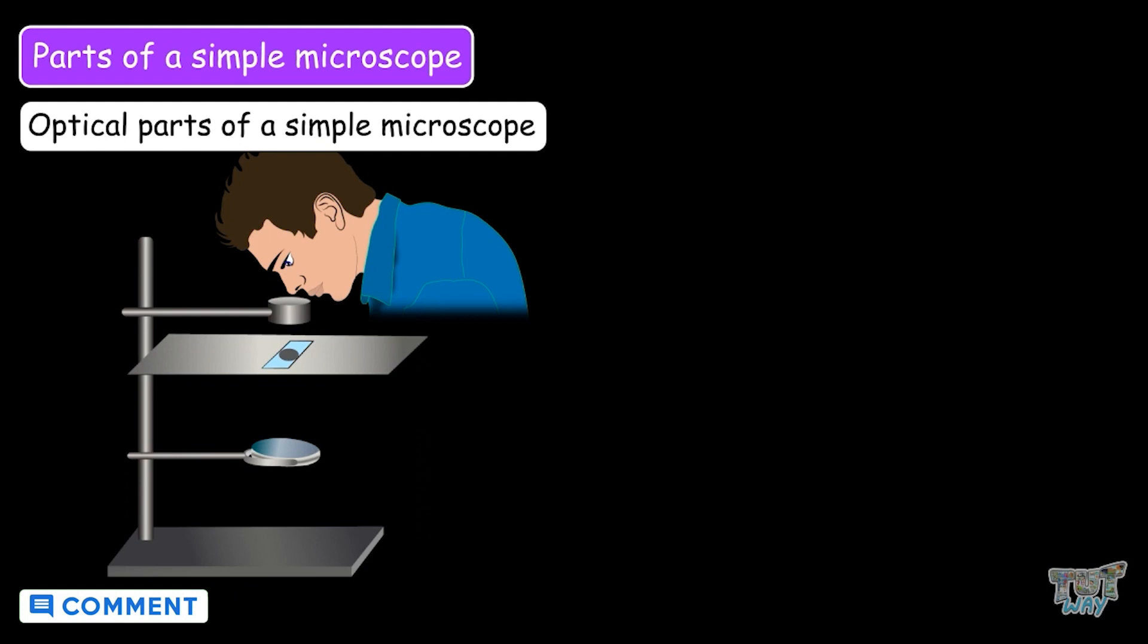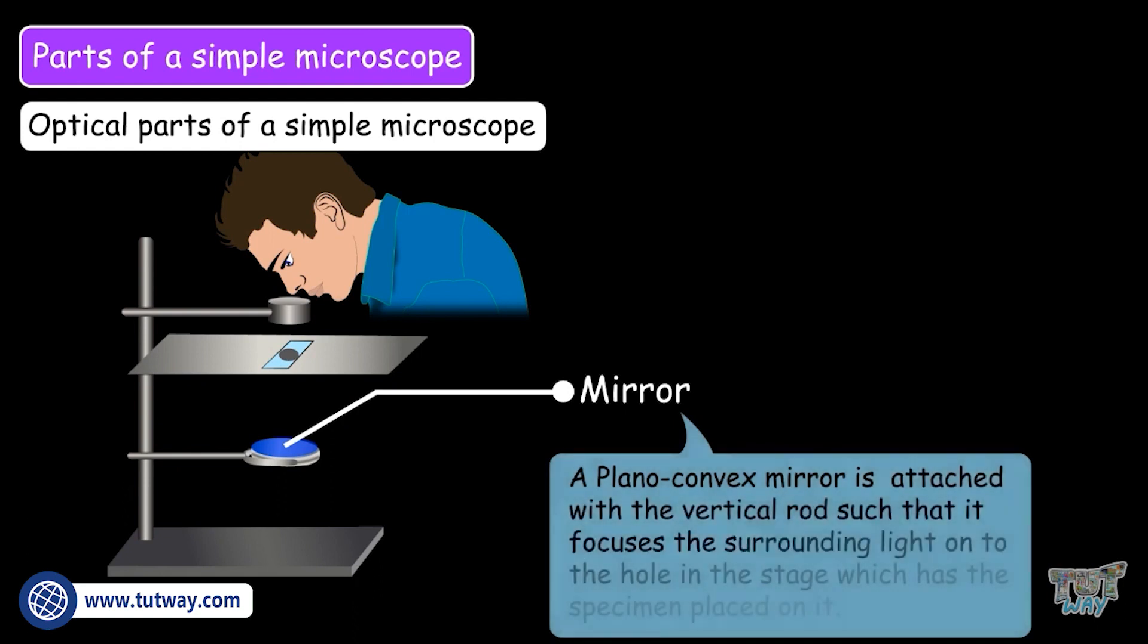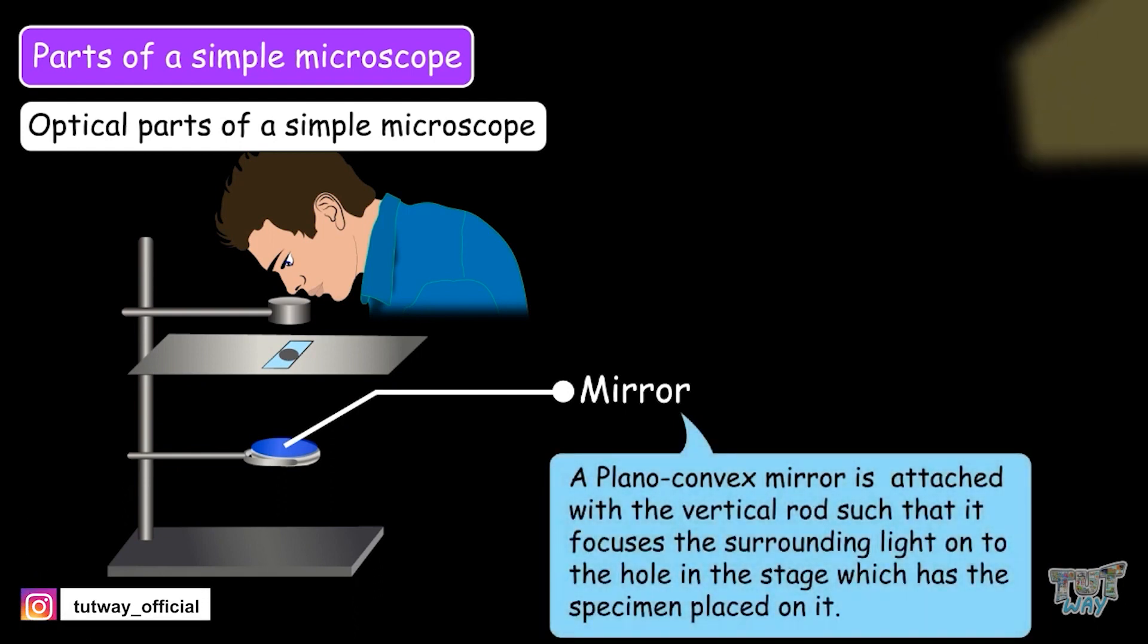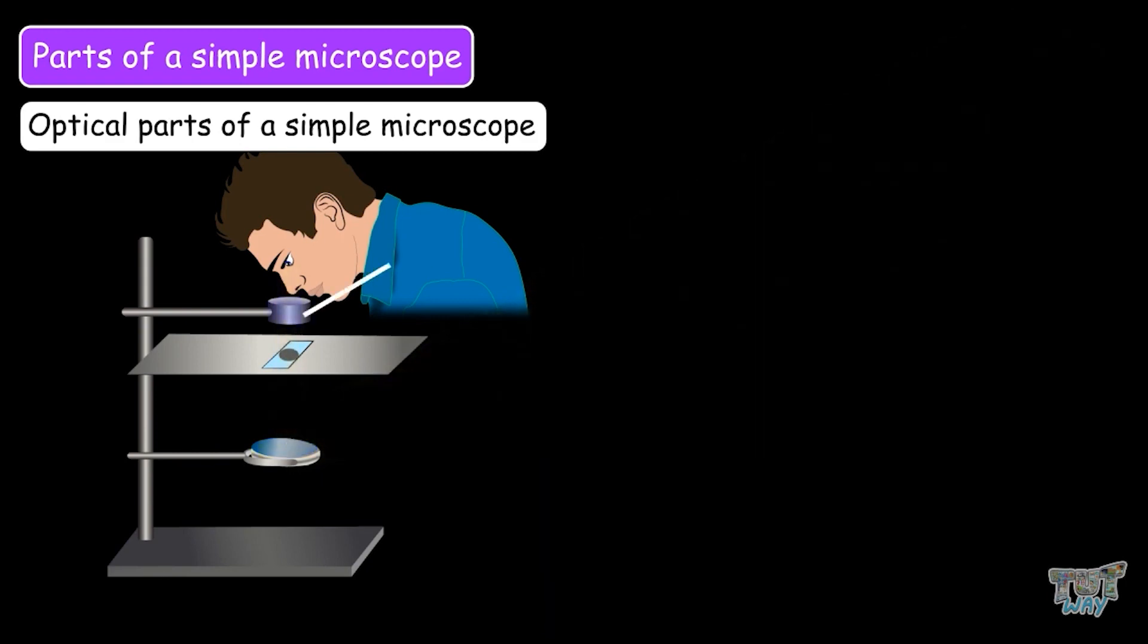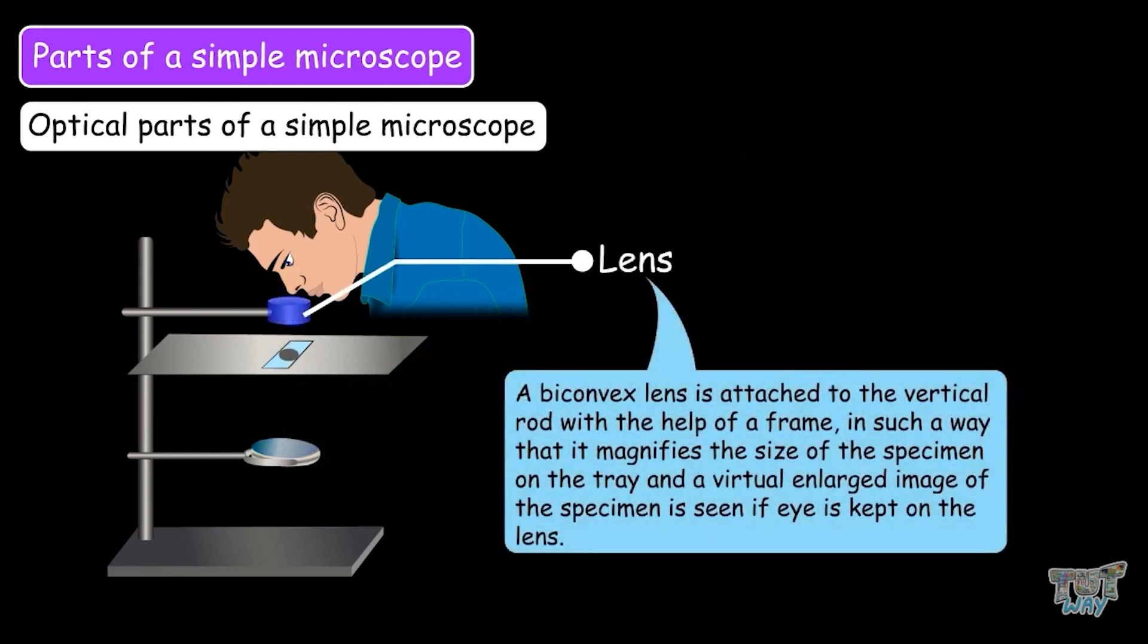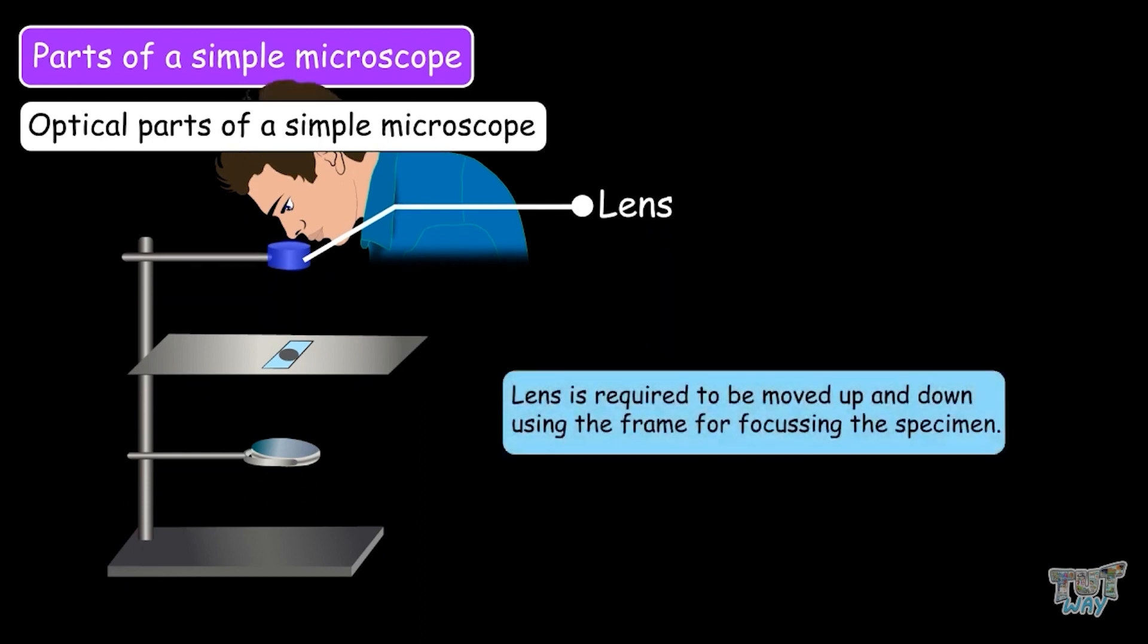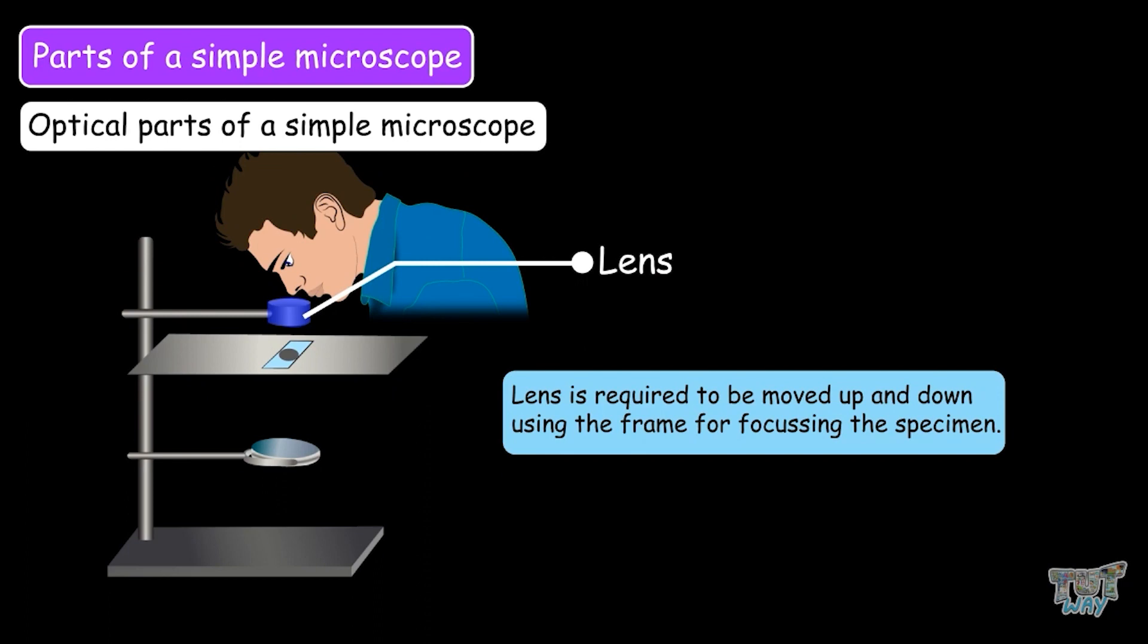Now let's learn the optical parts of the simple microscope. First one is the mirror. A plano-convex mirror is attached with the vertical rod such that it focuses the surrounding light onto the hole in the stage which has the specimen placed on it. Second is the lens. A biconvex lens is attached to the vertical rod with the help of a frame in such a way that it magnifies the size of the specimen on the tray and a virtual enlarged image of the specimen is seen if the eye is kept on the lens. The lens is required to be moved up and down using the frame for focusing the specimen.